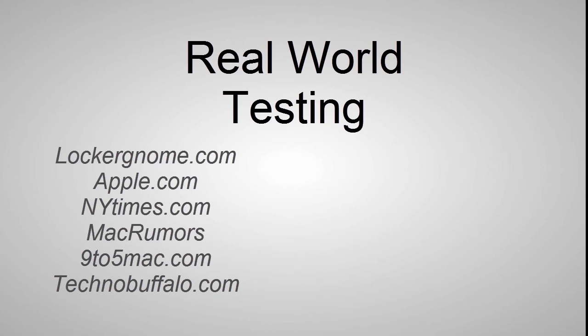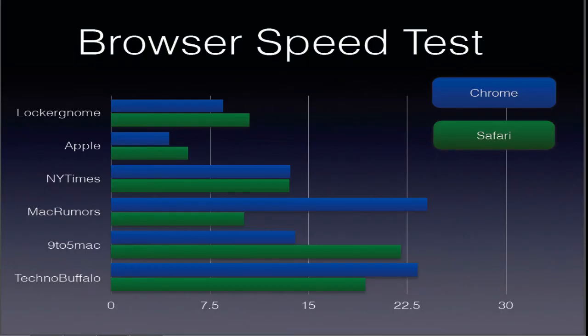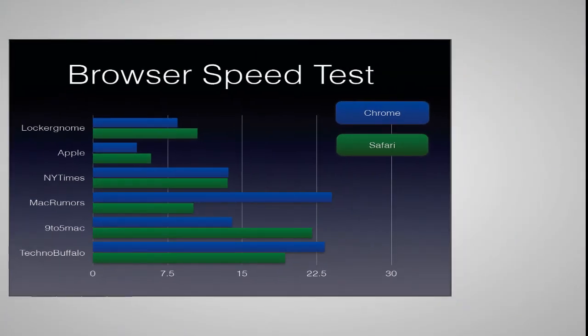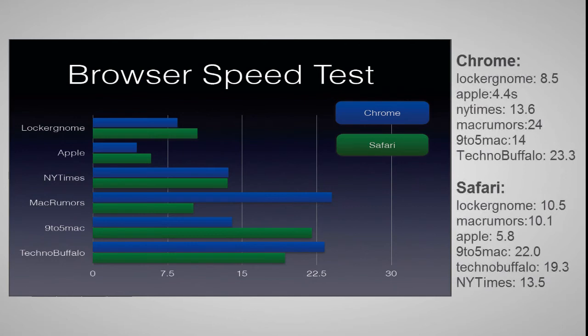This is basically where the difference starts to occur differently from the JavaScript benchmark tests — Chrome starts to get better in some of these website loading tests. When I loaded lochnome on Chrome, it took about 8.5 seconds. I did have a slow internet connection, so it was actually a lot slower. While on Safari, it took lochnome 10.5 seconds. For Apple.com, Chrome took 4.4 seconds, while Safari took 5.8 seconds.